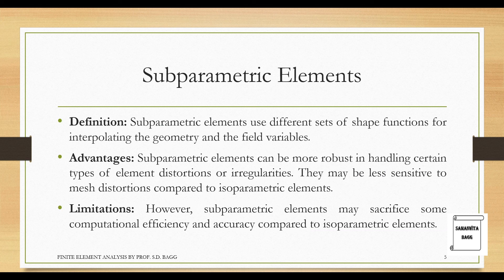Next we will talk about subparametric elements. Subparametric elements use different sets of shape functions for interpolating the geometry and the field variables. Advantages: Subparametric elements can be more robust in handling certain types of element distortions or irregularities. They may be less sensitive to mesh distortions compared to isoparametric elements.